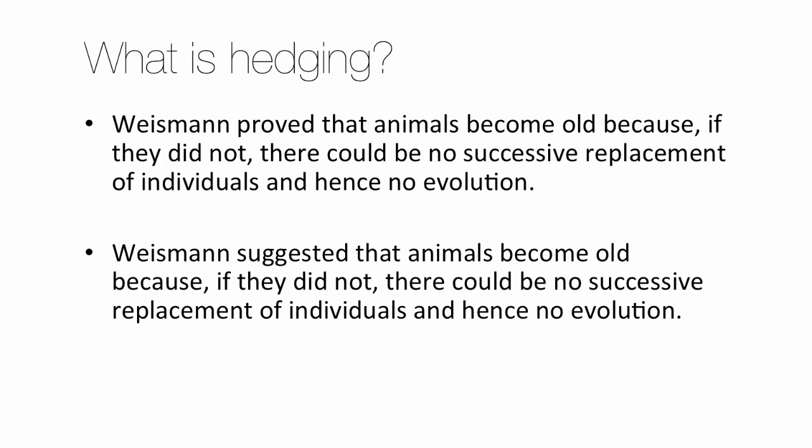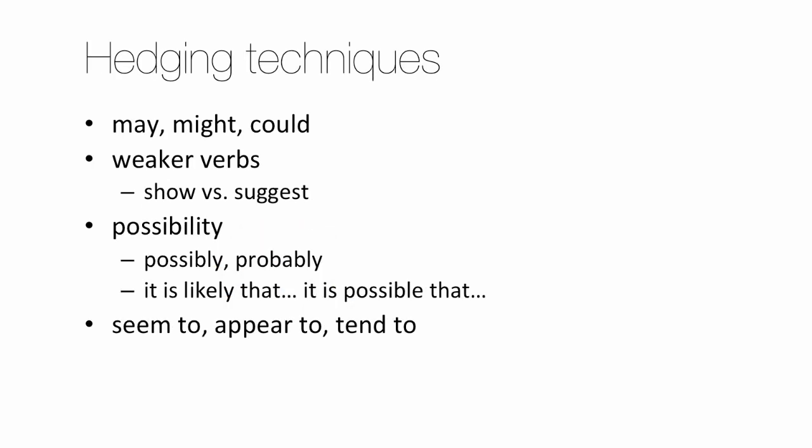When we write our opinions or ideas or other things that we can't be 100% certain are true, we use hedging to make our confidence level clear. The first sentence uses the word 'proved,' which implies 100% truth and acceptance, while the second uses 'suggested' to show it has not been accepted as 100% true. Hedging techniques include: words like may, might, and could; words like suggest; words like possibly, probably, it is likely that, it is possible that; and words like seem to, appear to show, tend to show, to make the claim even weaker.